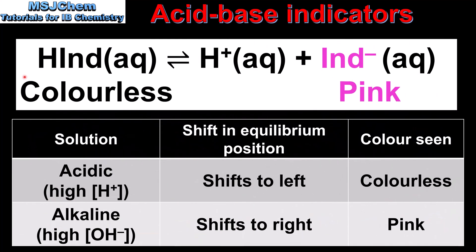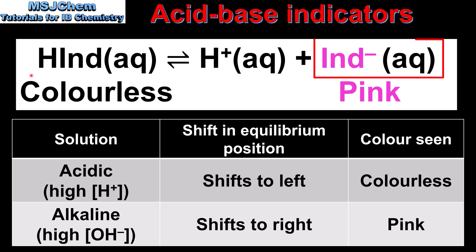Because Acid Base Indicators are weak acids, we can write equations that show their ionization. In this equation, HIND represents the weak acid, and IND⁻ represents its conjugate base. So for the Acid Base Indicator phenolphthalein, the unionized form represented as HIND is colorless, and the ionized form, the conjugate base represented as IND⁻, is pink.